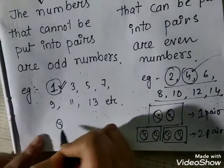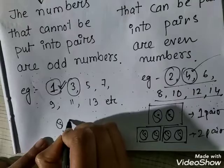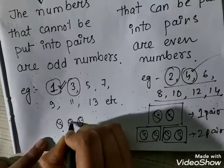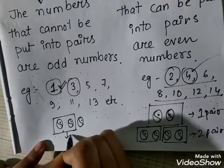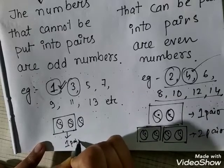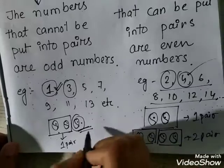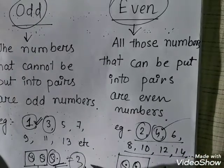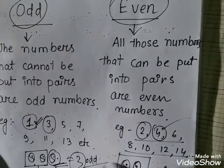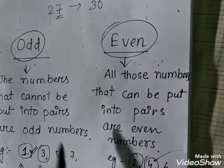In the case of odd numbers, we cannot pair them all. With one ball, it cannot be paired. With three balls: two balls form one pair, but one ball is left alone. Since one ball cannot be paired, three is also called an odd number.